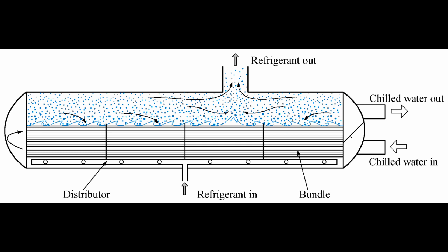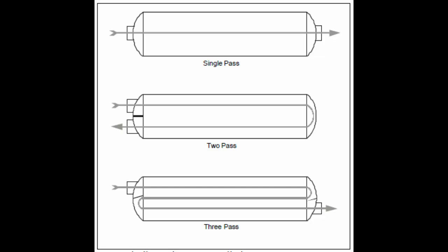In a two or three pass cooler, water will enter from the side of the cooler and exit from the same side. The further three categories of cooler are the same as shell and tube or flooded type cooler — the only difference is its passes.